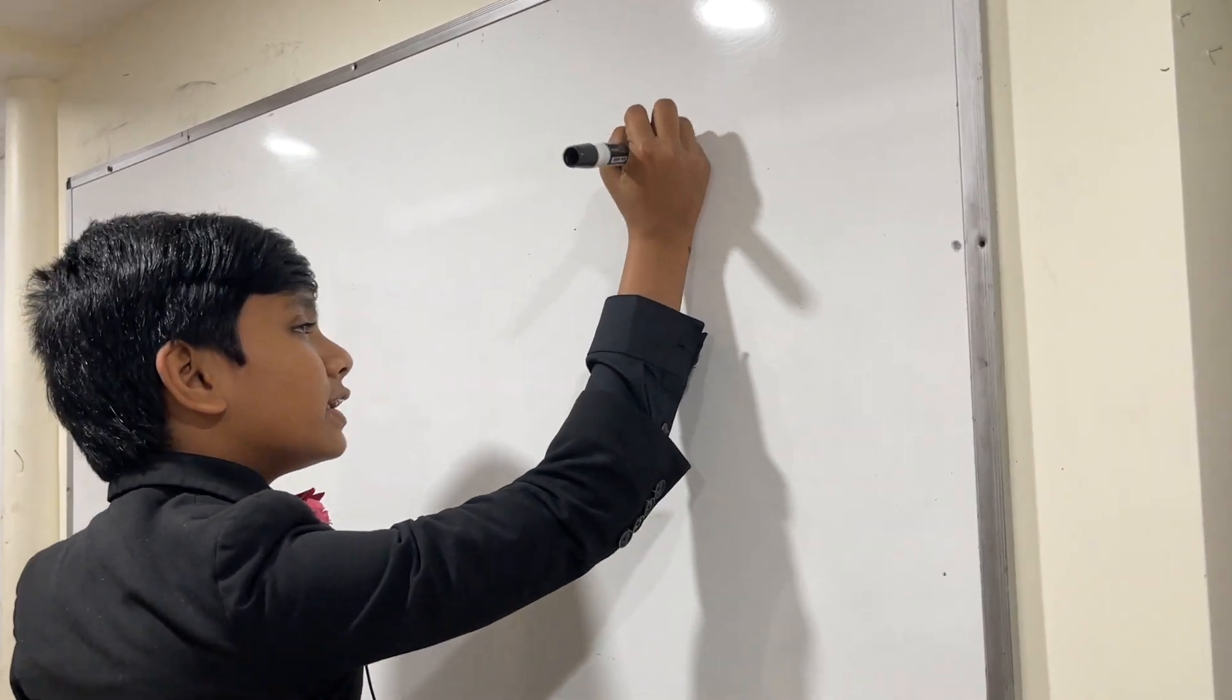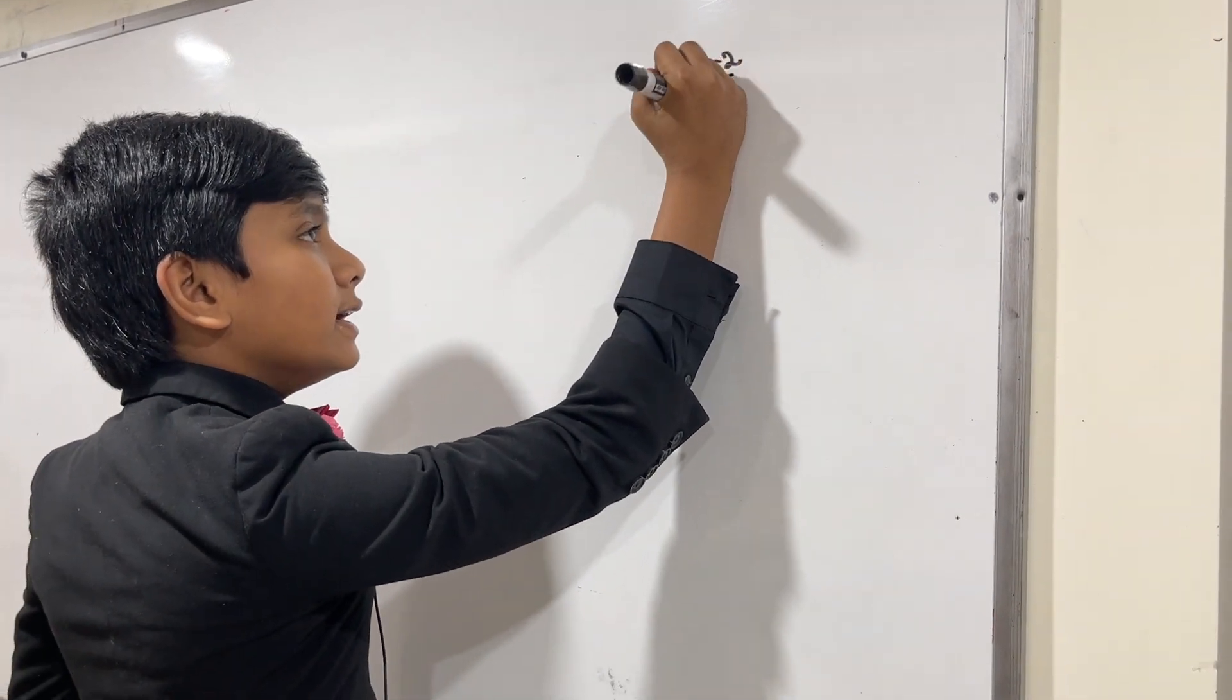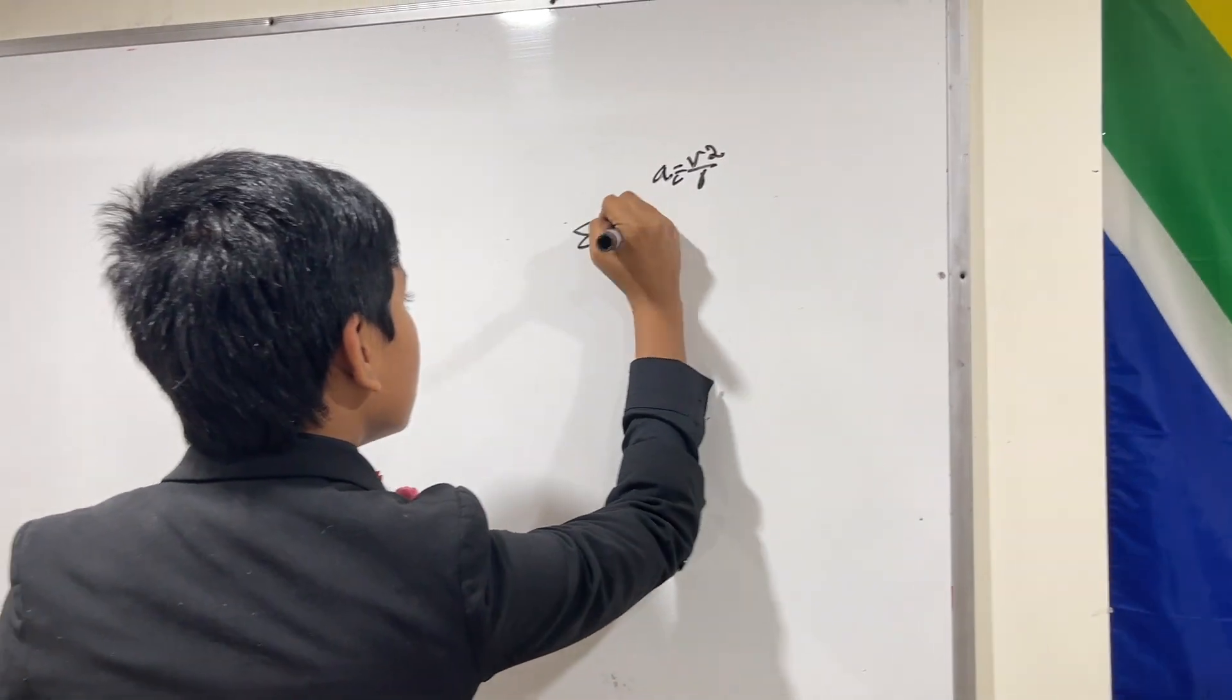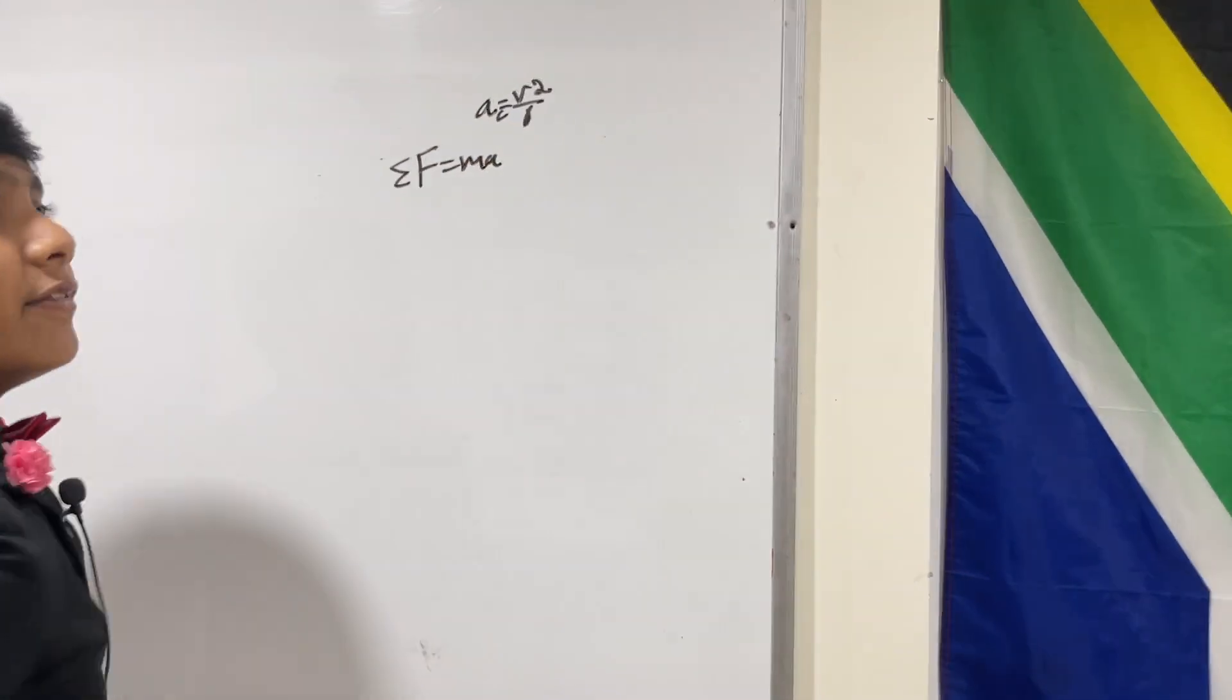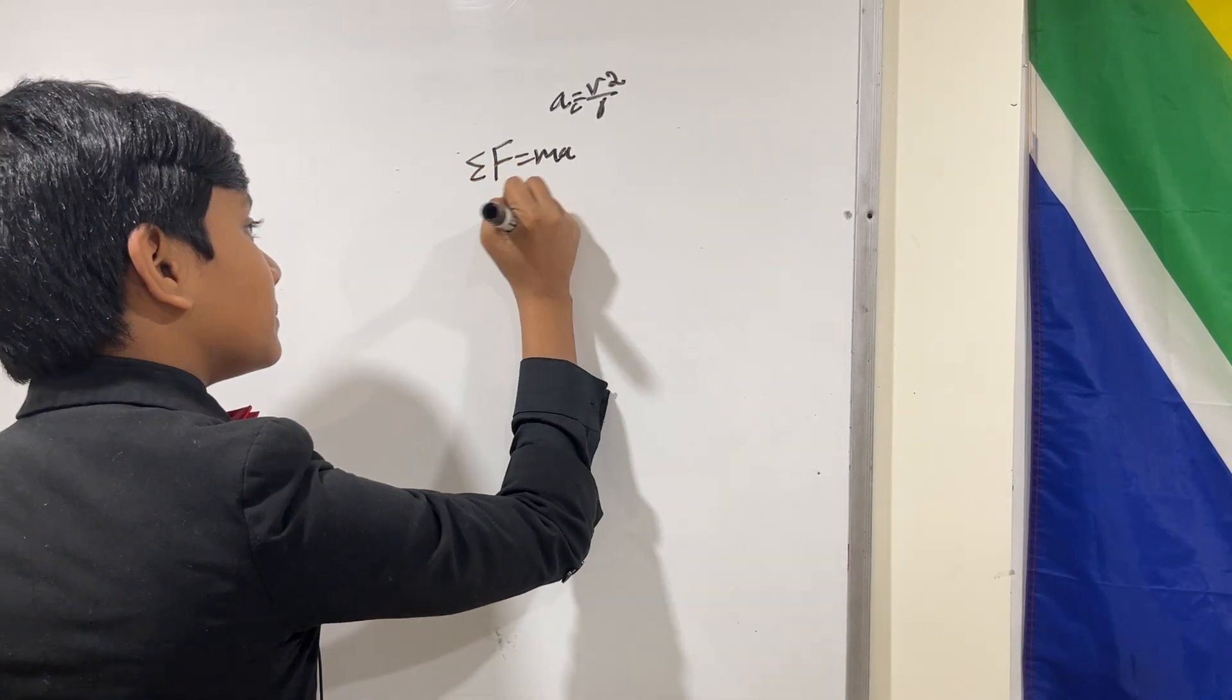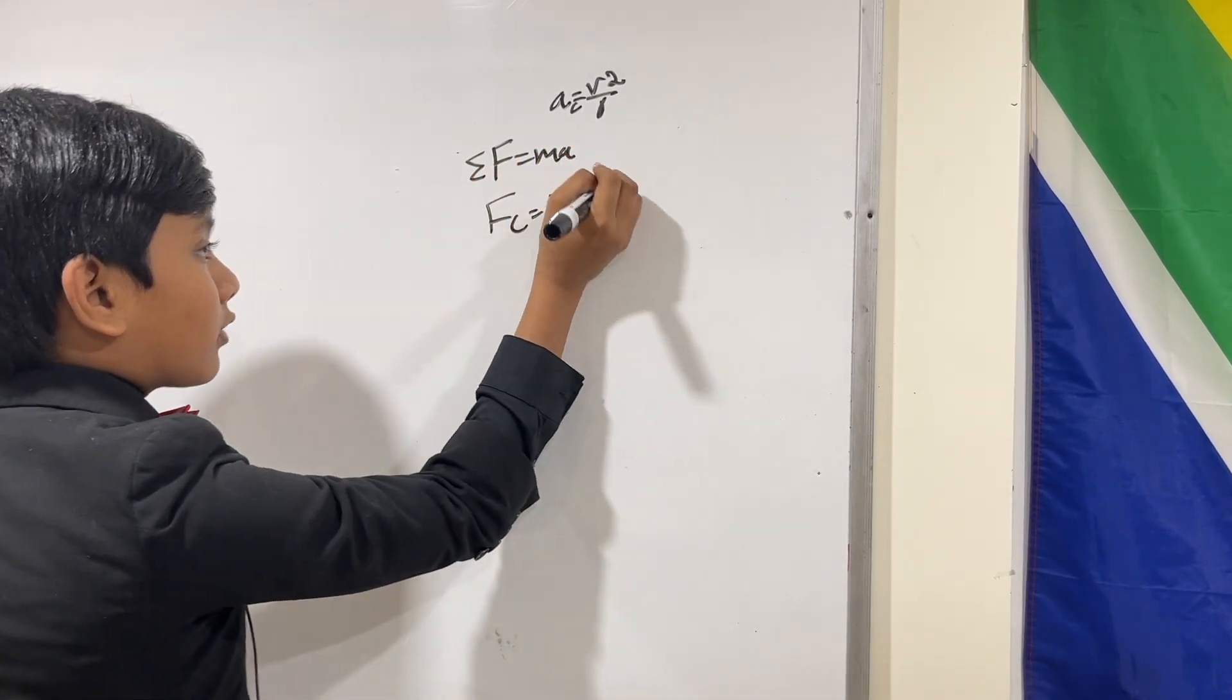Now, I proved in a past video that the acceleration, the centripetal acceleration, is v squared over r. And using the law Fnet = ma, we realize that Fc is simply mv squared over r.